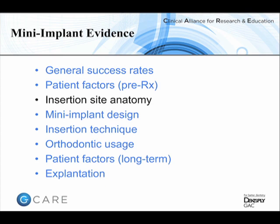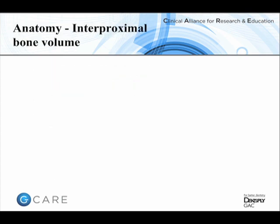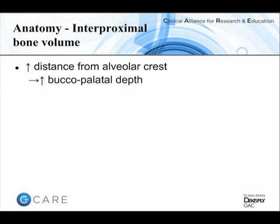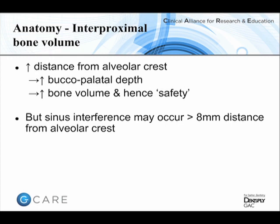Focusing on the insertion site, it's worth bearing in mind it's a three-dimensional area, not just a two-dimensional site as seen on radiographs. When one cross-sections the alveolar crest it's triangular in shape, so the further we go from the alveolar crest towards the gingival margin, the wider the alveolus is, giving more buccal-palatal depth and more bone volume. However, if we go too far from the gingival margin in the maxillary arch we start to approximate the maxillary sinus, and on the palatal side of the alveolus there is more space than on the buccal side.